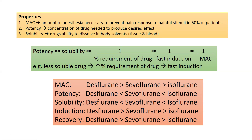Potency is directly proportional to solubility, so if a drug has high potency it will have high solubility. This is inversely related to the percentage requirement of a drug — meaning if a drug has high potency and high solubility, less drug is needed to achieve the desired effect. Conversely, a drug with low solubility and low potency will need a greater percentage requirement to produce the desired effect.